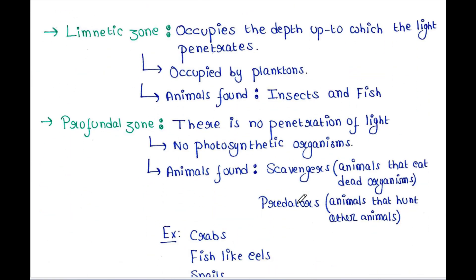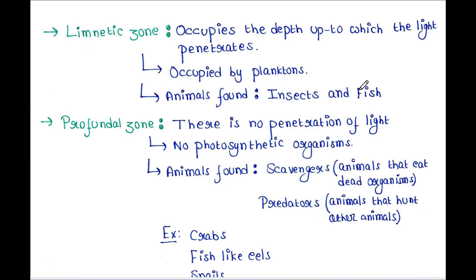The limnetic zone occupies the depth up to which light penetrates. It is occupied by planktons. The animals found in this zone are insects and fish.